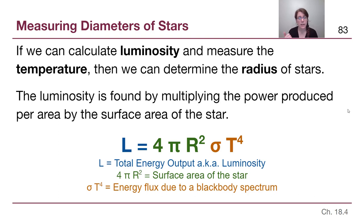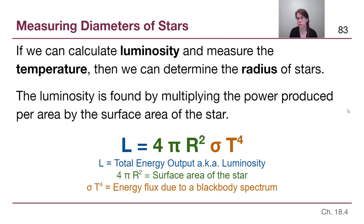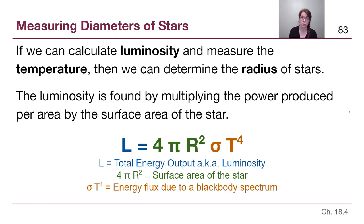Luminosity can be calculated if we are able to measure the apparent brightness with our telescopes and use the distance to the star to calculate luminosity. We haven't really talked about it — it's the inverse square law — but we don't need to go into it deeply. If we know the apparent brightness and distance, we can get luminosity to a star. That is fairly easy to do.